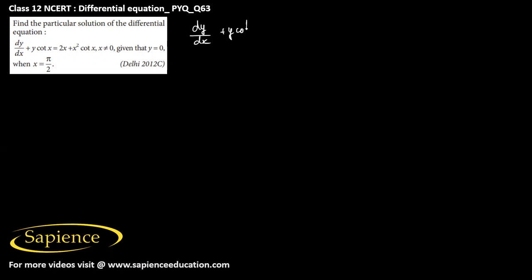We have to find the particular solution of this differential equation: dy/dx + y·cot(x) = 2x + x²·cot(x), where x is not equal to 0, and it is given that y = 0 when x = π/2. We will use this condition to find the value of the arbitrary constant in the general solution.